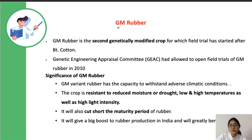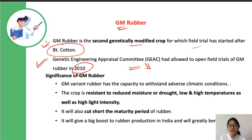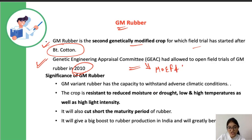This is the second genetically modified crop for which field trials have started, after BT cotton — BT cotton is already being grown by many farmers. GEAC allowed open field trials of GM rubber in 2018. GEAC is the apex body responsible for GM crops; it controls the introduction, storage, export, and import of all genetically modified organisms. GEAC functions under the Ministry of Environment, Forest and Climate Change.